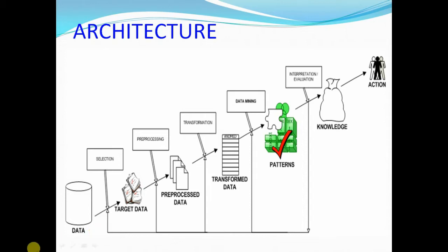In this architecture, some data is available in the database. From this database location, it will be selecting the targeted requirement — we'll select the information from this database. After selecting this target data, it will go to pre-processing, which involves dividing the information into subsets and feature evaluation.